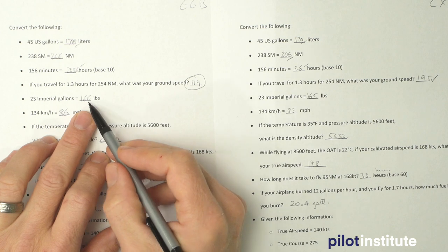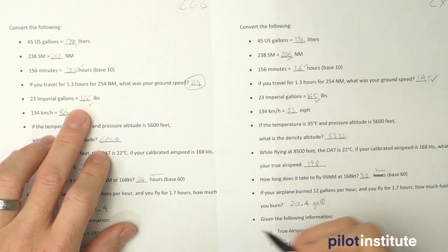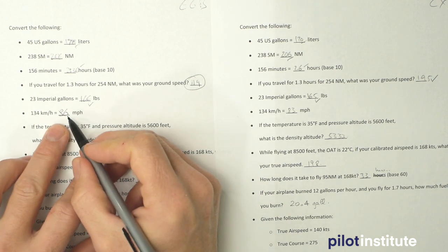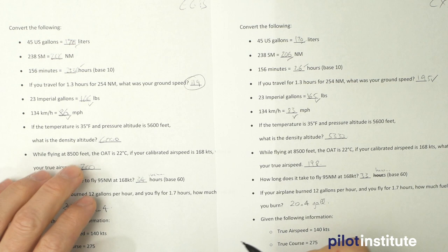And then 166 pounds here for 23 Imperial gallons, 165 with the CX-3, close enough. And then here the conversion, 86 miles per hour versus 83, again pretty close.